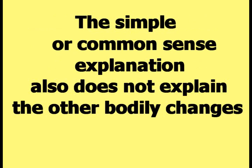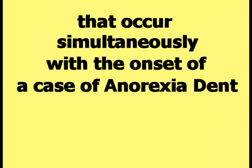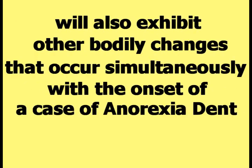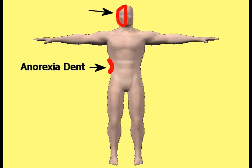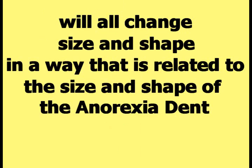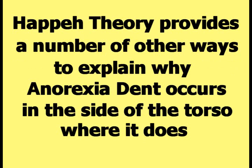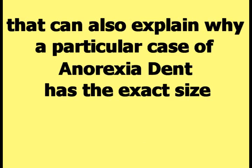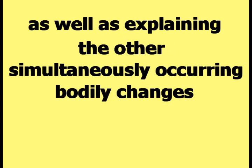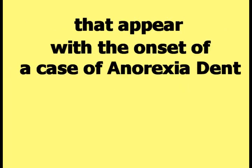The simple explanation also does not explain the other bodily changes that occur simultaneously with the onset of anorexia dent. The head, the arm, and the leg on the same side of the body as the anorexia dent will all change size and shape in a way that is related to the size and shape of the anorexia dent, and their normal behavior will change in some way. Happy Theory provides explanations that can account for the exact size, shape, and location of anorexia dent, as well as these simultaneously occurring bodily changes.